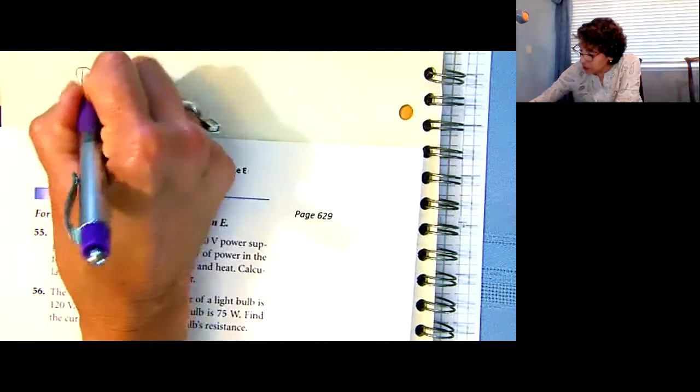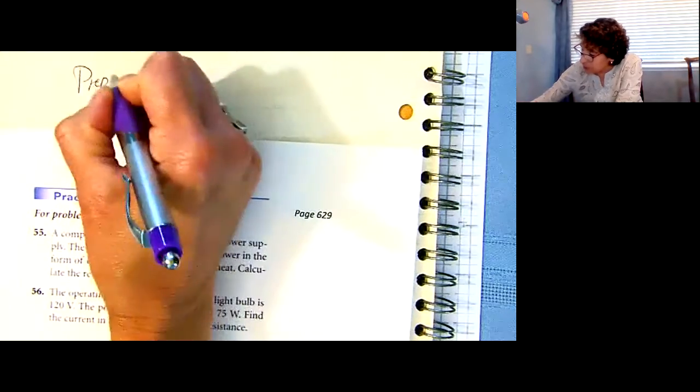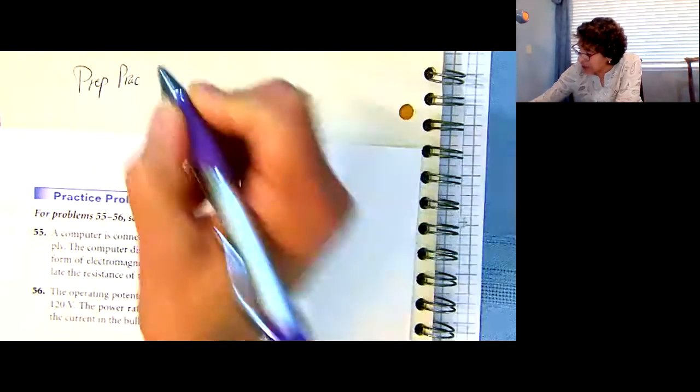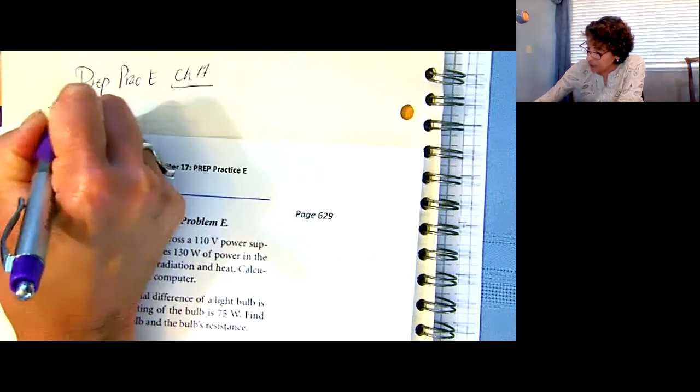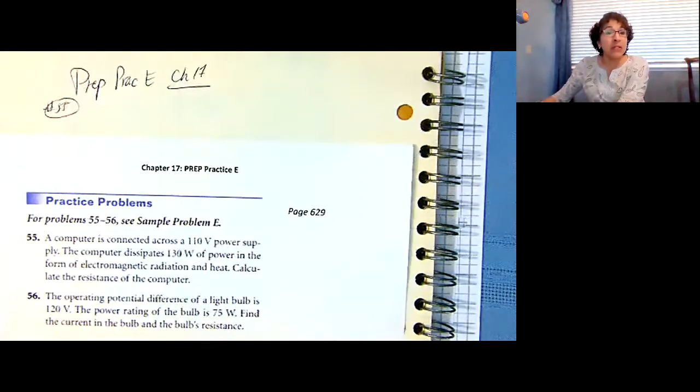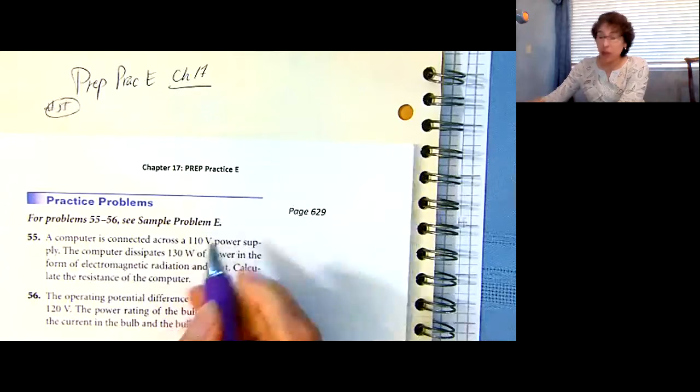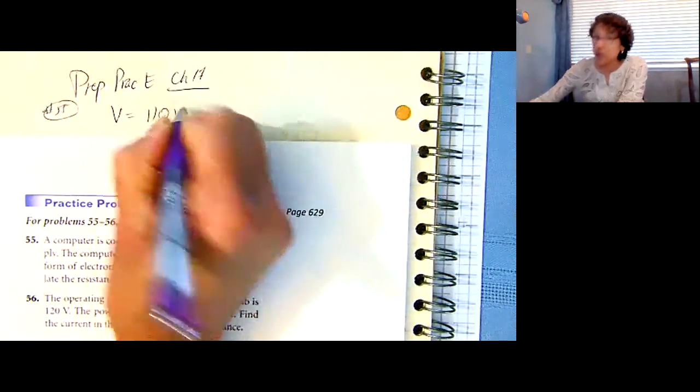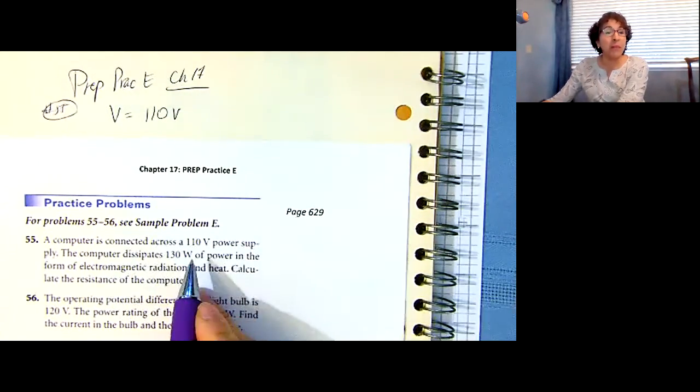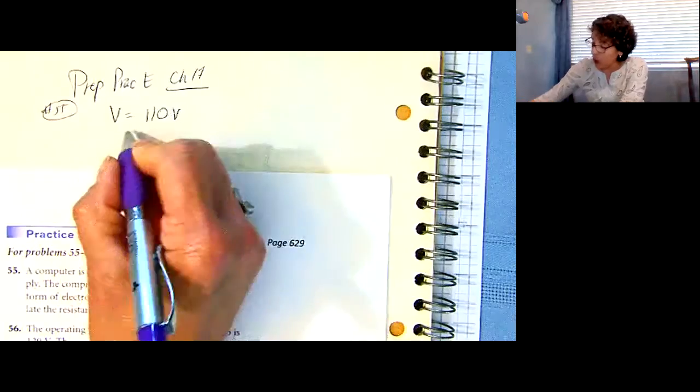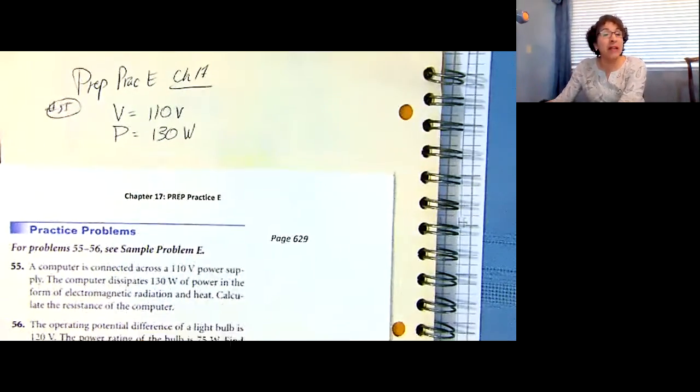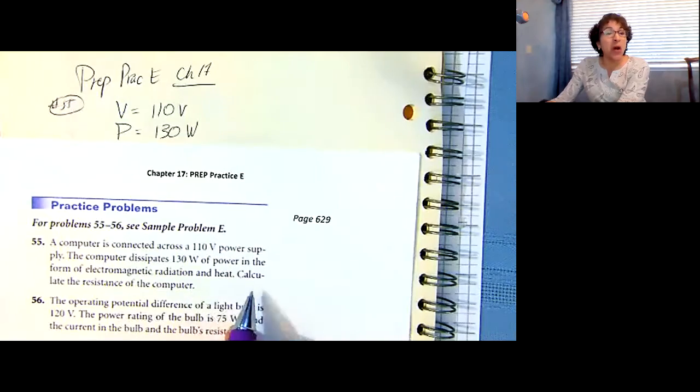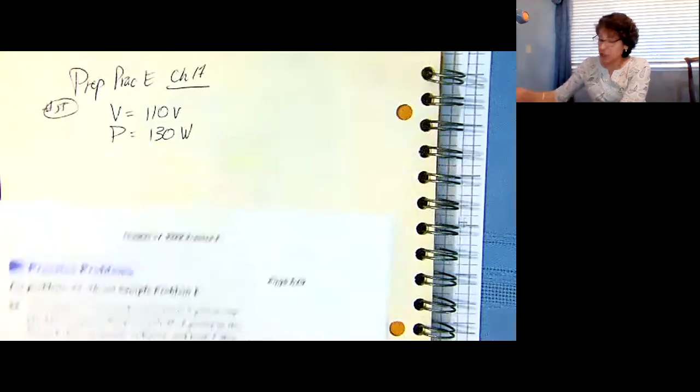You probably have noticed some of your devices get hot after a while. They're dissipating some of the power in terms of heat. Calculate the resistance of the computer. So when you write this down, prep, this is for practice E, Chapter 17, number 55. So I've got the voltage is 110 volts, and the power dissipates 130 watts.